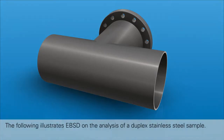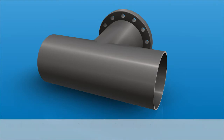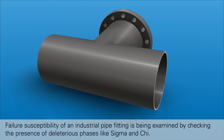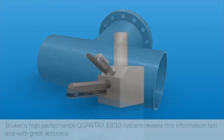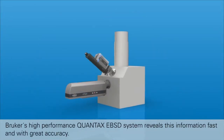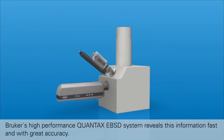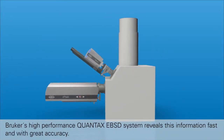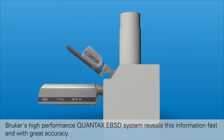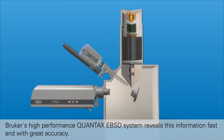The following illustrates EBSD on the analysis of a duplex stainless steel sample. Failure susceptibility of an industrial pipe fitting is being examined by checking the presence of deleterious phases like sigma and chi. Bruker's high-performance Quantax EBSD system reveals this information fast and with great accuracy.